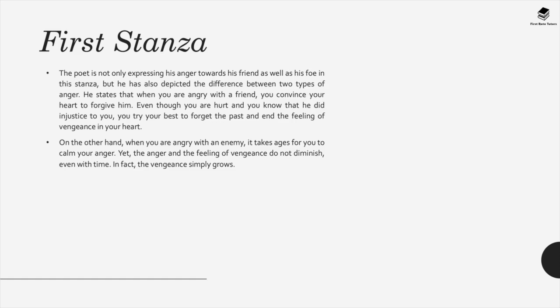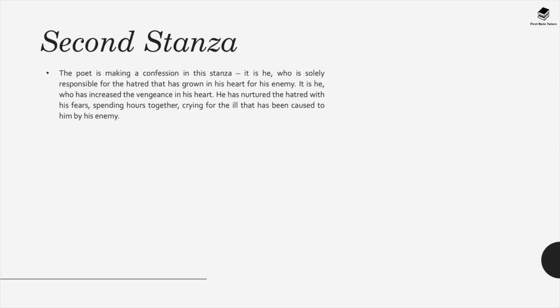In the first stanza, the poet expresses his anger towards both his friend and his foe — though it can also refer simply to the narrator. He depicts two types of anger: when angry with a friend, you convince your heart to forgive. But when angry with an enemy, the feeling of vengeance doesn't diminish with time — in fact, it simply grows.